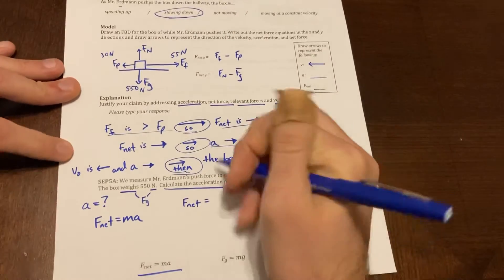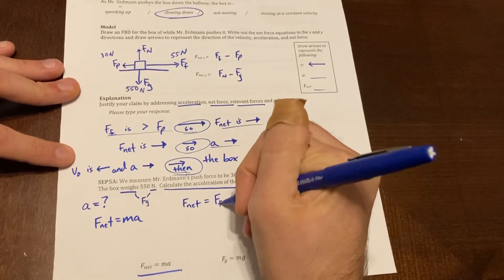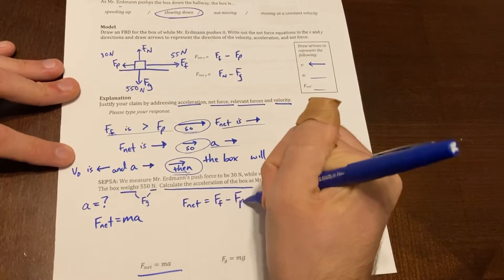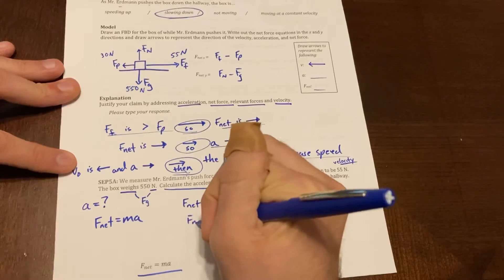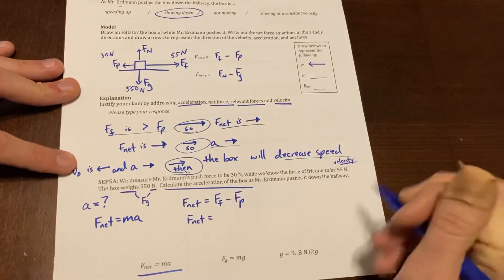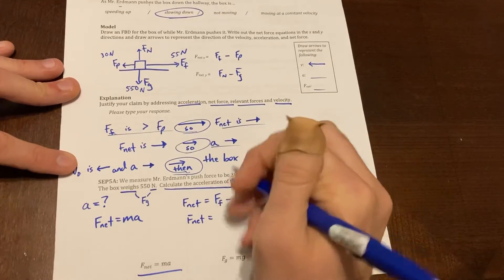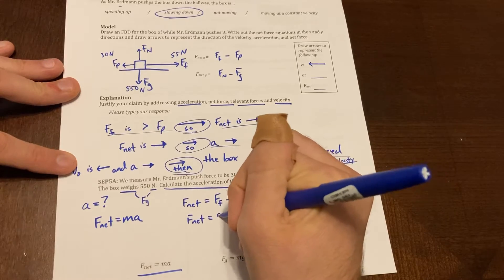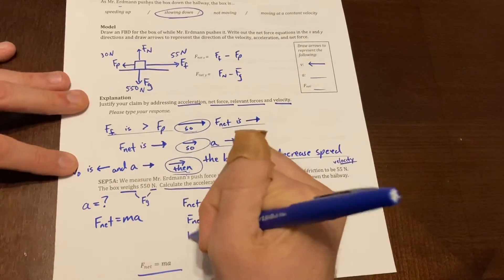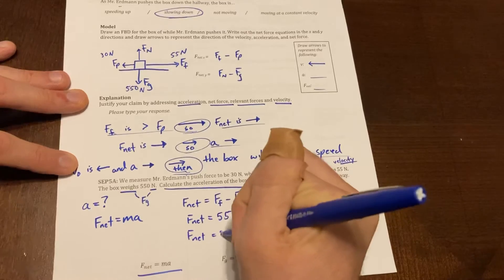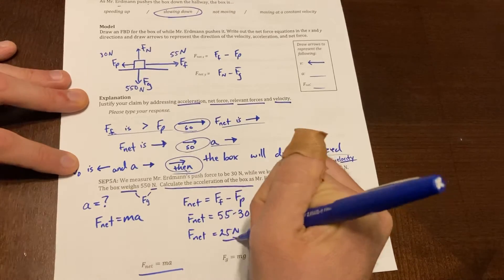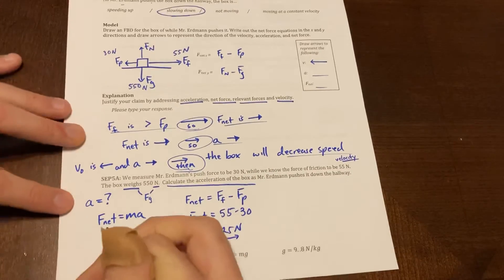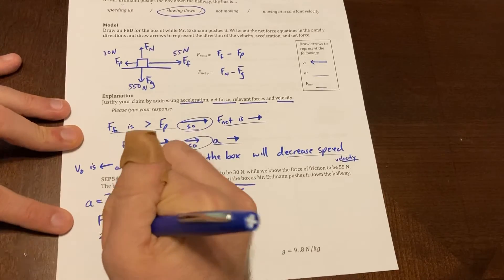So for my net force, if I go down over here, my force of friction minus my force push, I'm going to get my net F_net to be force of friction, which is 55 minus 30, my force push, and my F_net is going to be 25 newtons going to the right. So I can plug that in over here now, 25.